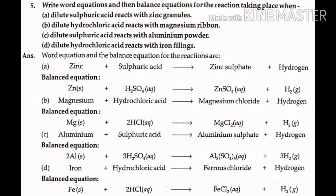(c) Dilute sulfuric acid reacts with aluminum powder. Word equation: Aluminium + sulfuric acid → aluminum sulfate + H2. Balanced equation: 2Al + 3H2SO4 → Al2(SO4)3 + 3H2. (d) Dilute hydrochloric acid reacts with iron filings. Word equation: Iron + hydrochloric acid → ferrous chloride + hydrogen. Balanced equation: Fe + 2HCl → FeCl2 + H2. (Indicate the physical state.)